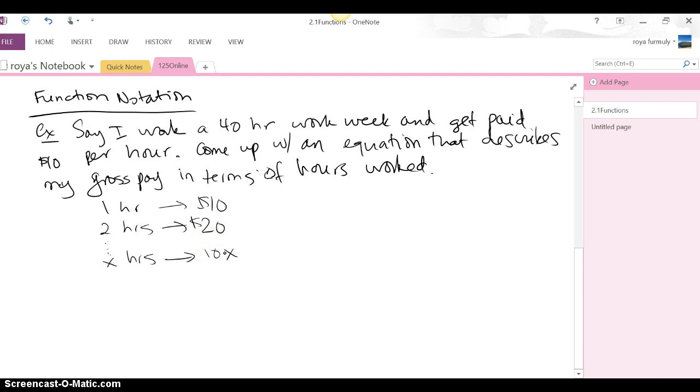So all we do is multiply the number of hours times the $10 an hour. So maybe you already came up with this on your own. y equals 10x. It could be an equation that describes what my gross pay is. So in our variables I've chosen, x is hours and y for me is gross pay.